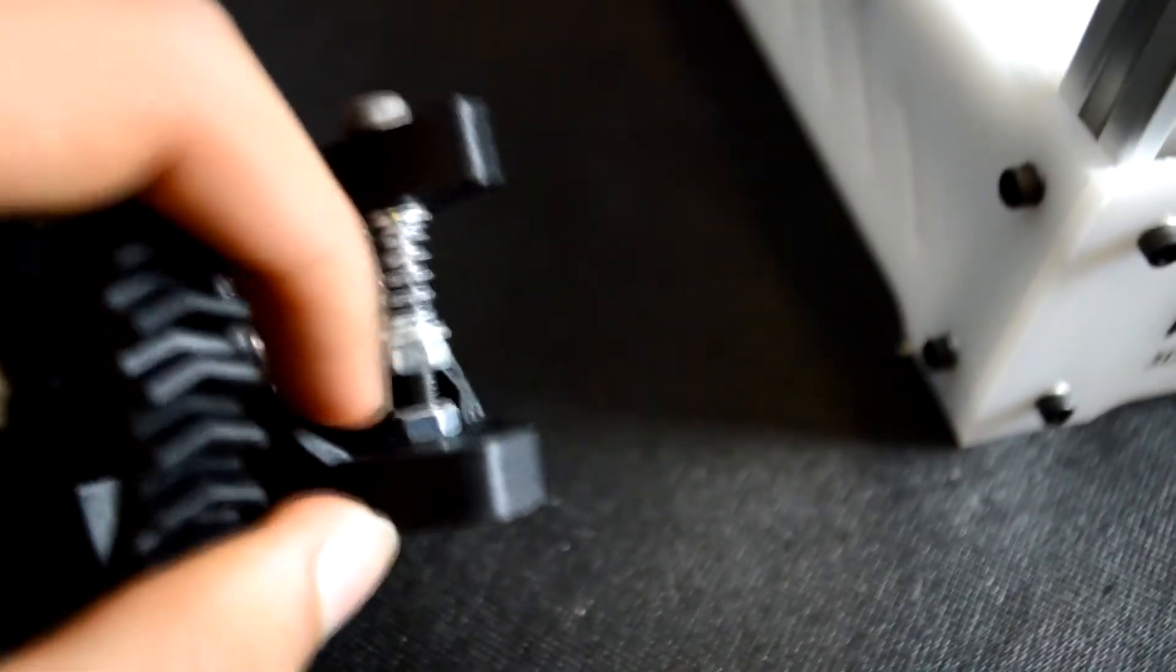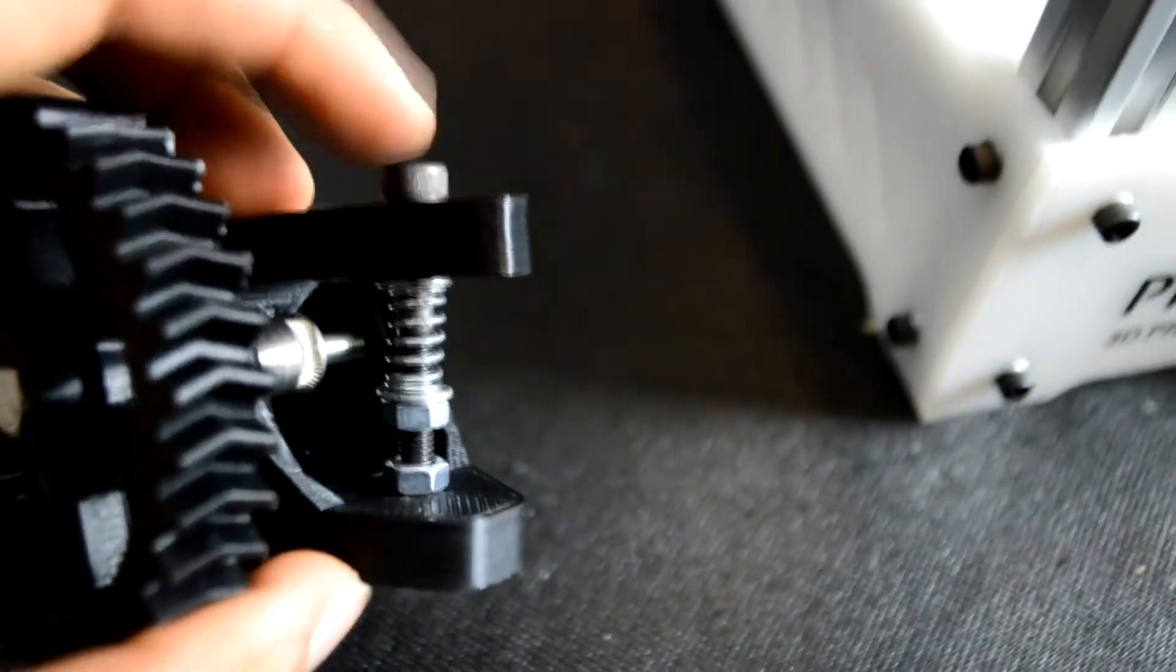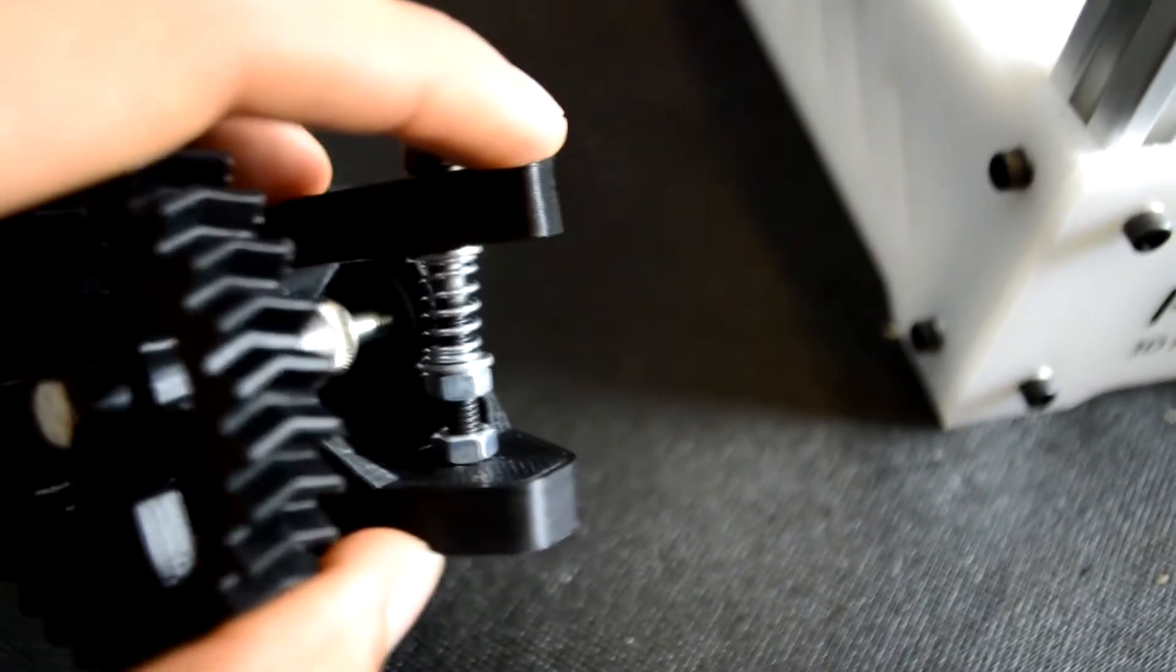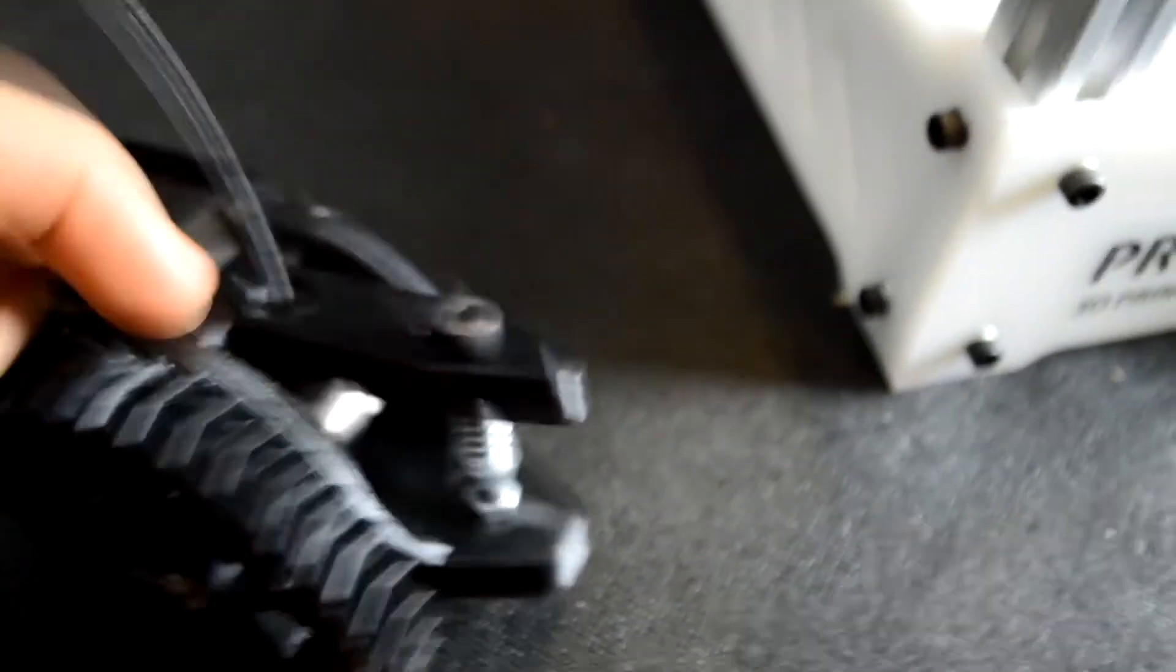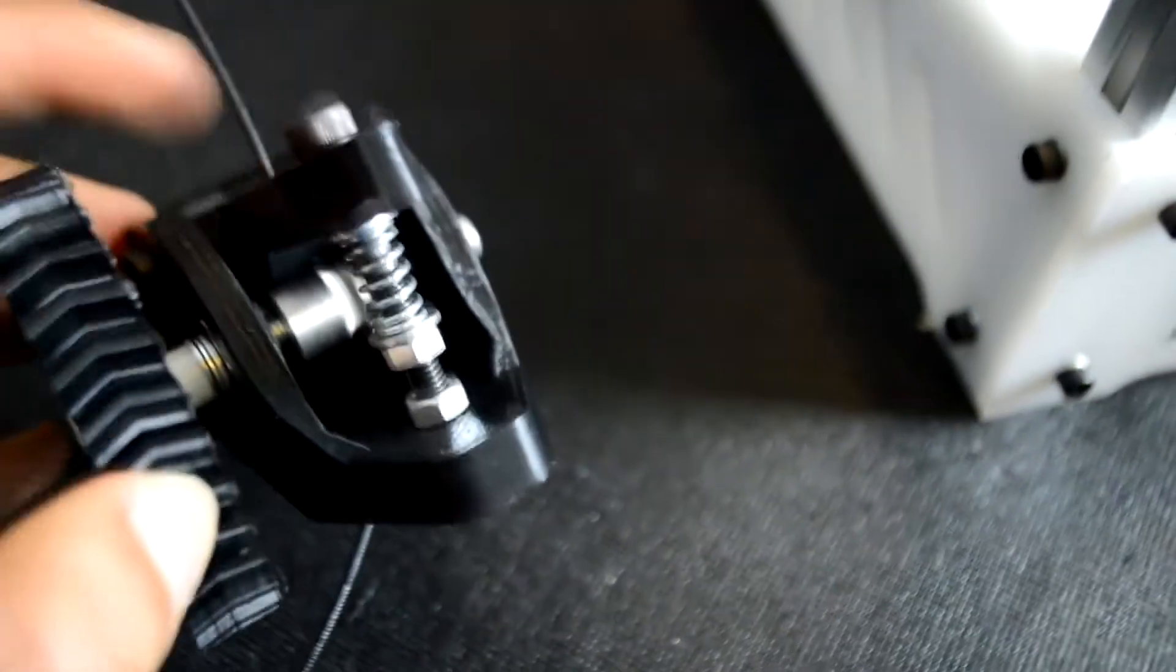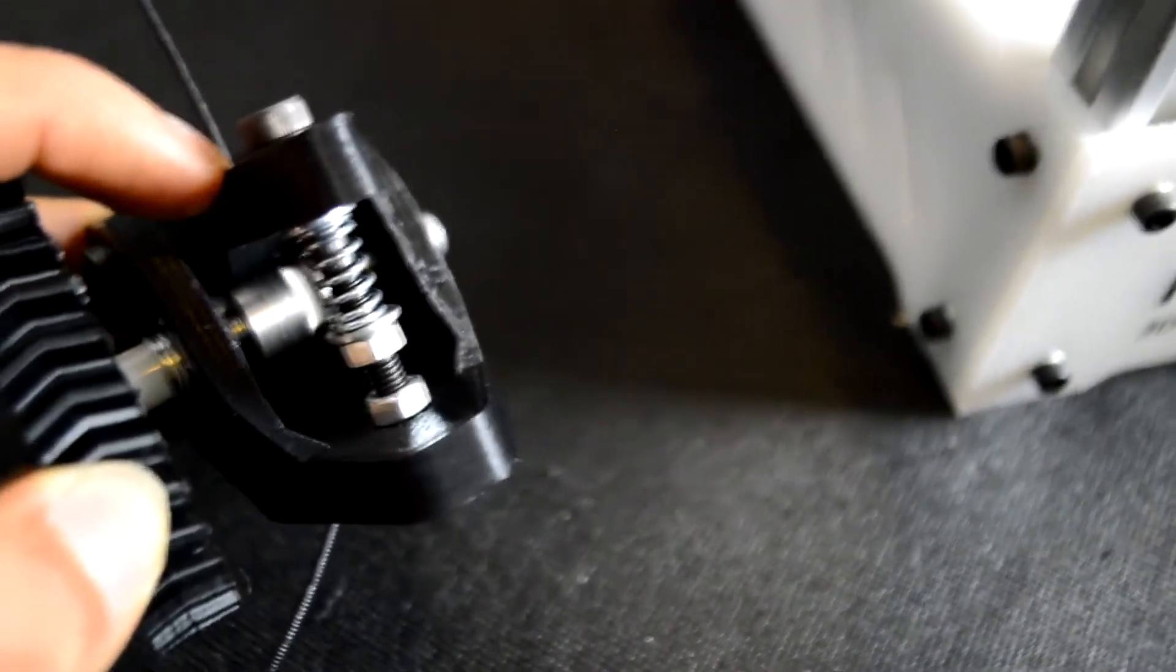Next, what you want to do is take another M5 nut and place it on the bottom of this M5 by 14mm bolt. That should actually raise the arm and get the bearing closer to the extruder gear. And that should resolve any problems you've been having with tension.